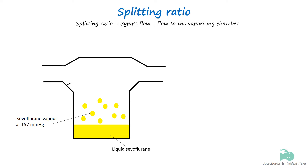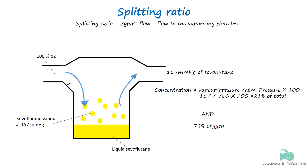The vapor covers the liquid sevoflurane. Now let's add a fresh gas or oxygen flow to get that anesthetic vapor. The resultant gas flow will now have the vapor of sevoflurane in it, assuming the flow is slow enough to let it equilibrate. This is 157 mmHg, or approximately 21 percent of total flow if expressed as a percentage.